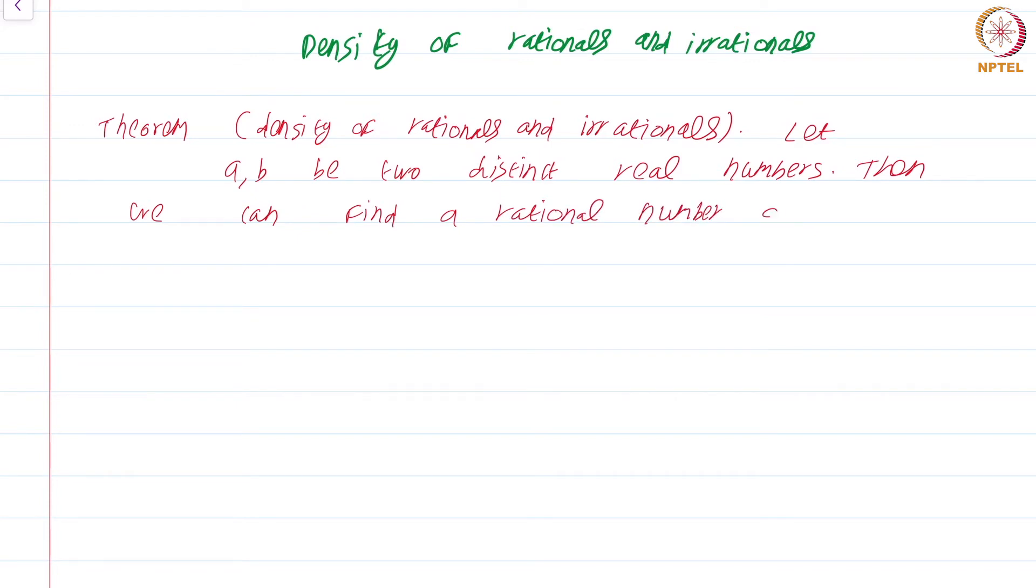Theorem: Density of rationals and irrationals. What this theorem says is the following: Let a, b be two distinct real numbers. Then we can find a rational number q in (a,b) and an irrational number c in (a,b).